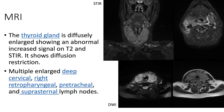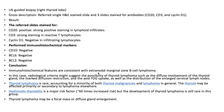The patient underwent biopsy, which revealed a diagnosis of extranodal marginal zone B-cell lymphoma. In this case, radiological criteria might suggest the possibility of a thyroid lymphoma, such as the diffuse involvement of the thyroid gland, the marked diffusion restriction, the avid FDG uptake, as well as the distribution of the enlarged cervical lymph nodes.